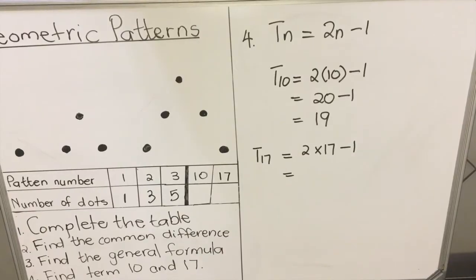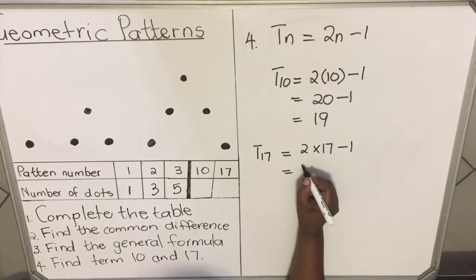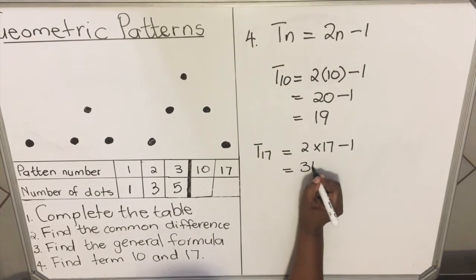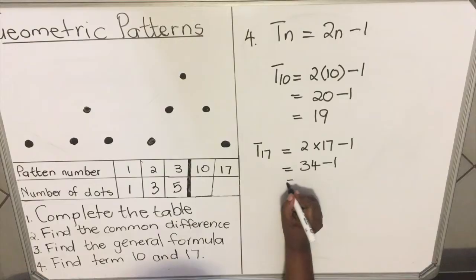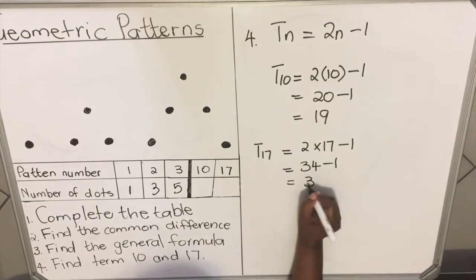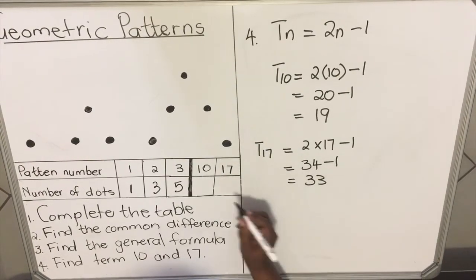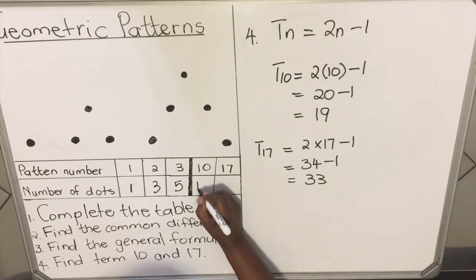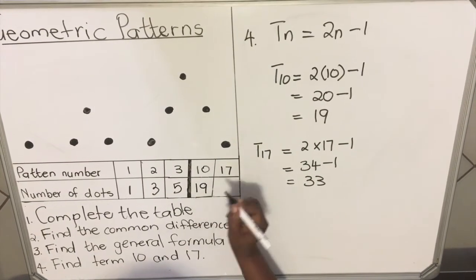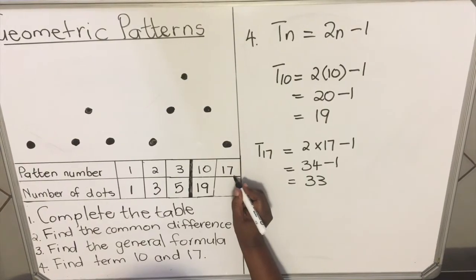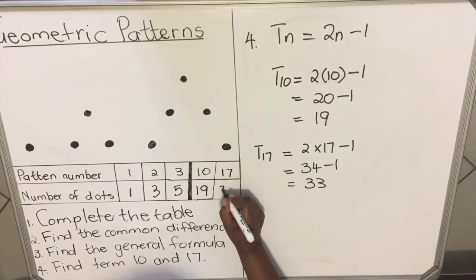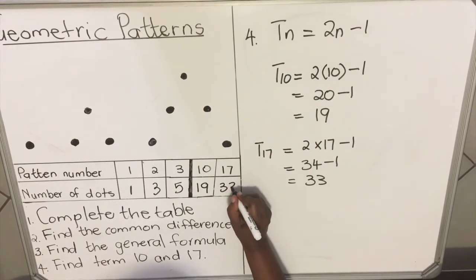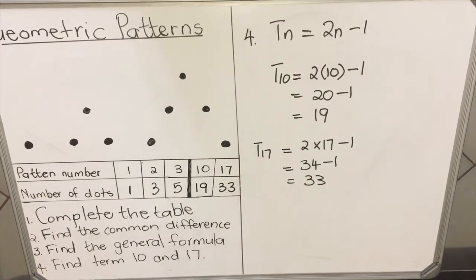Two times seventeen is thirty-four, minus one equals thirty-three. So in the seventeenth term you have 33 dots. Go to the table and complete it: T10 is 19 and T17 is 33.